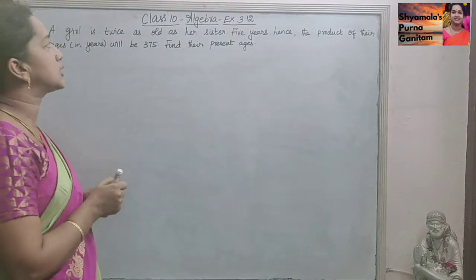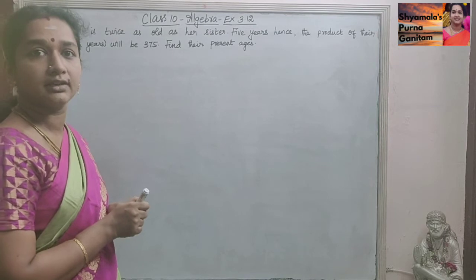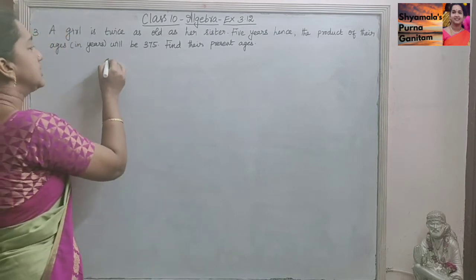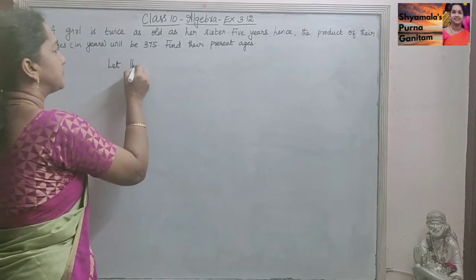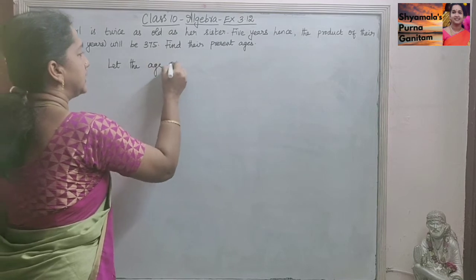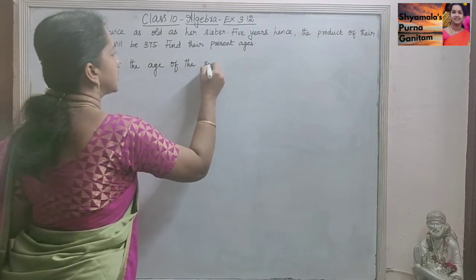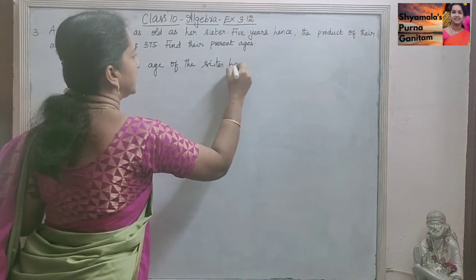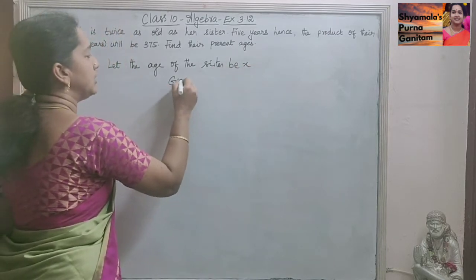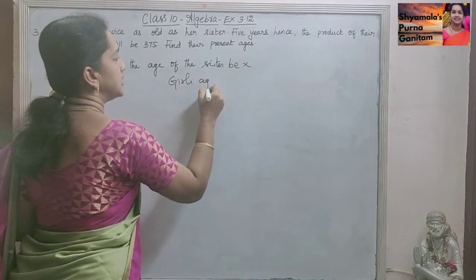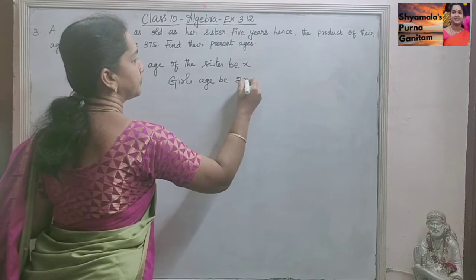So a girl is twice as old as her sister. That is the question given. Let the age of the sister be X. And the girl's age be 2X.